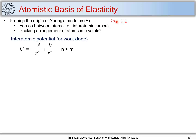We know that interatomic potential can be written in a specific form. If we have two atoms, the potential energy of attraction or repulsion between them is called the interatomic potential. This consists of an attractive part and a repulsive part of the interatomic potential.